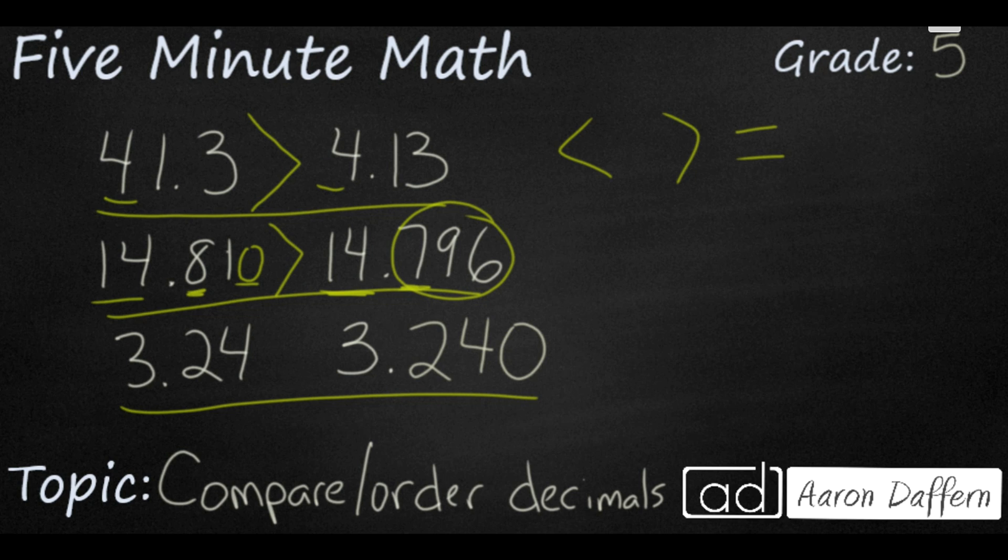The last number is a trick. 3 and 24 hundredths is actually going to be equal to 3 and 240 thousandths because you always need to make them go to the same place value. You put that 0 there and you see they are equal.